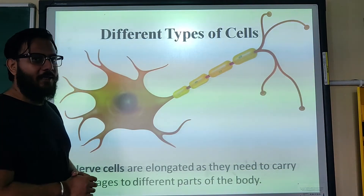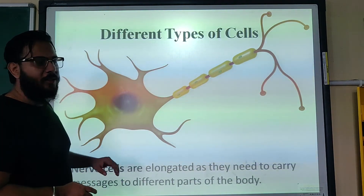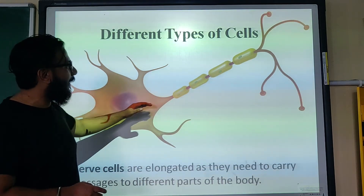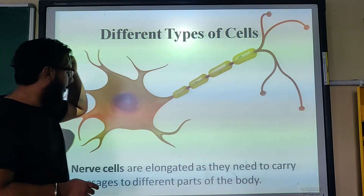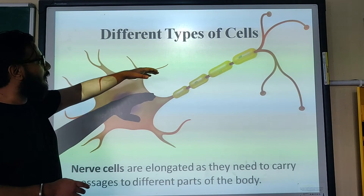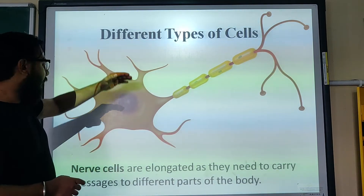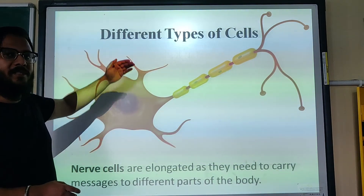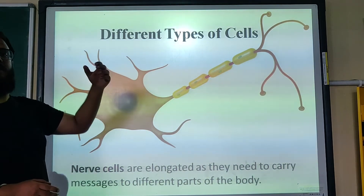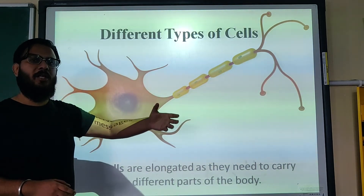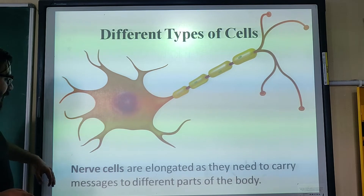Now let's talk about different types of cells in animals. The first type is the nerve cell. Nerve cells have a head and an elongated body. They have an elongated body because they need to carry information and messages from the brain to different parts of the body, and from different parts of the body back to the brain.